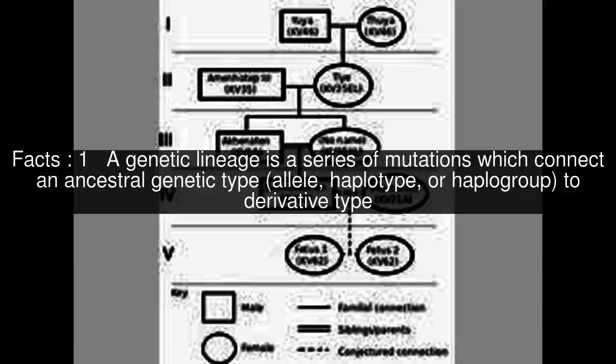A genetic lineage is a series of mutations which connect an ancestral genetic type — allele, haplotype, or haplogroup — to a derivative type.